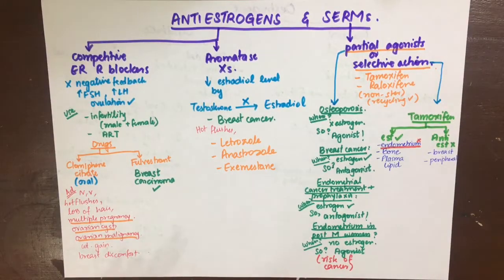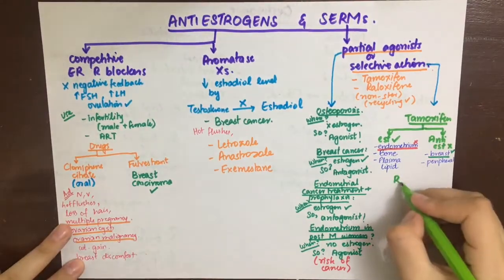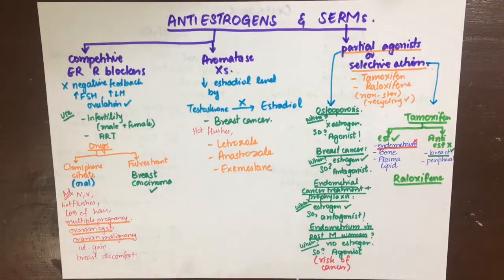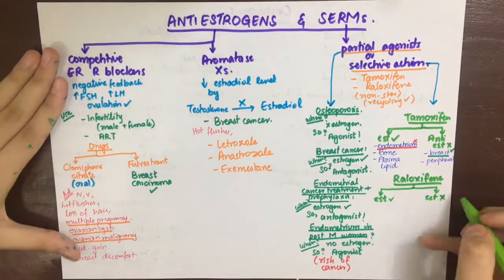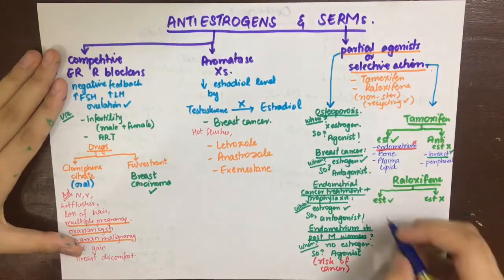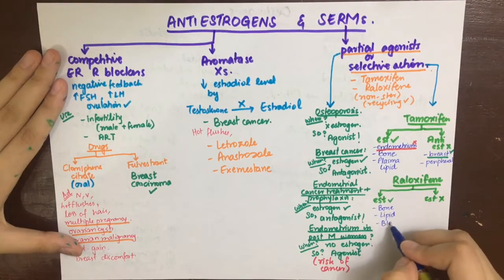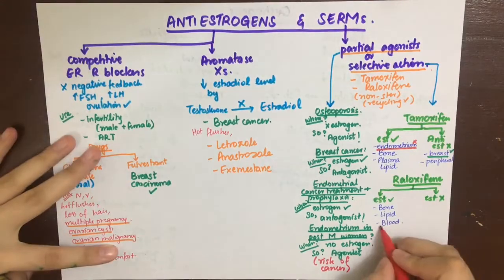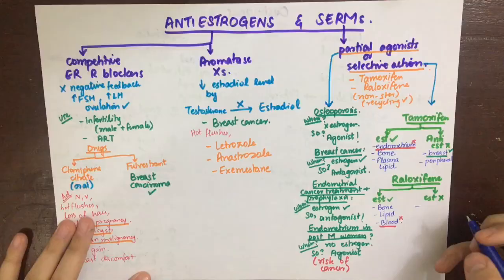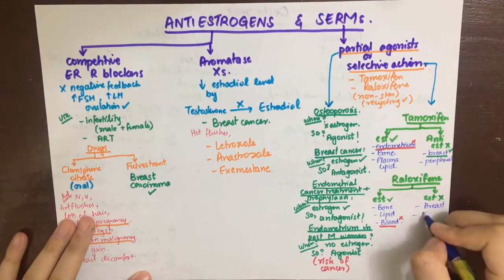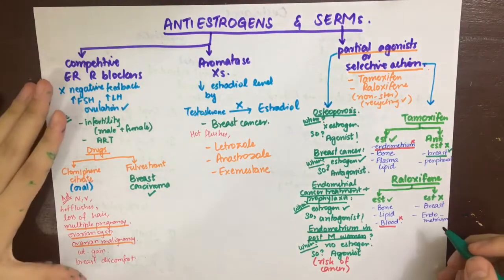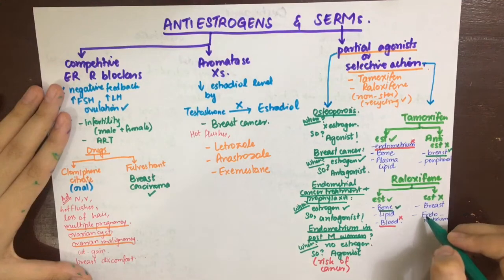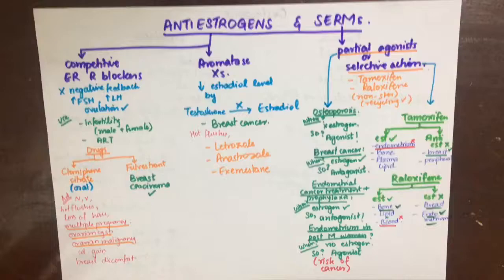Raloxifene also has estrogenic and anti-estrogenic actions. Its estrogenic actions on bone decrease osteoporosis risk; on lipids it increases HDL and decreases LDL; but on blood it causes increased coagulability as a side effect, raising risk of DVT, thromboembolism, and pulmonary embolism. Its anti-estrogenic actions are on breast tissue and endometrial tissue, so it can be used in breast cancer treatment and endometrial carcinoma. That's all about estrogens and anti-estrogens.